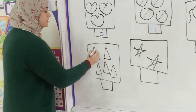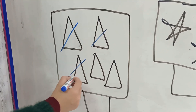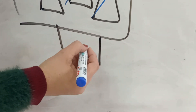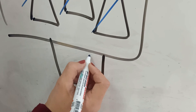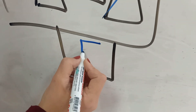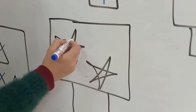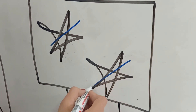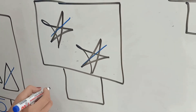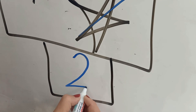How many triangles here? Let's count together: one, two, three, four, five. We are going to write number five. How do we write number five? Starting point. How many stars here? Let's count together: one, two, three, four, five. How many stars here? Yes, two. We are going to write number two here. How do we write number two, KG1? Starting point, half a heart and sleeping stick.